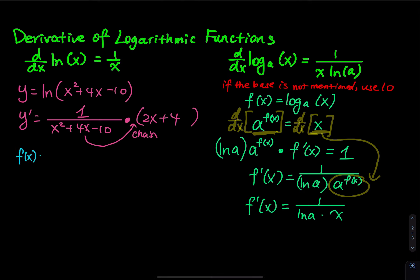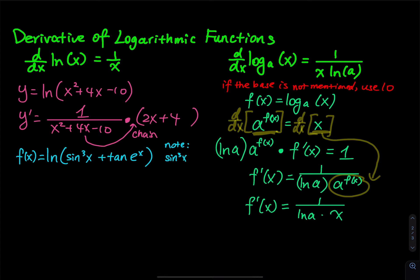Example 2: f(x) = ln(sin³(3x) + tan(eˣ)). An important note: sin³(x) means sin(x) raised to the third power — you evaluate sin(x) first, then raise that result to the third power. The third power does not belong to x; you do not raise x to the third power.